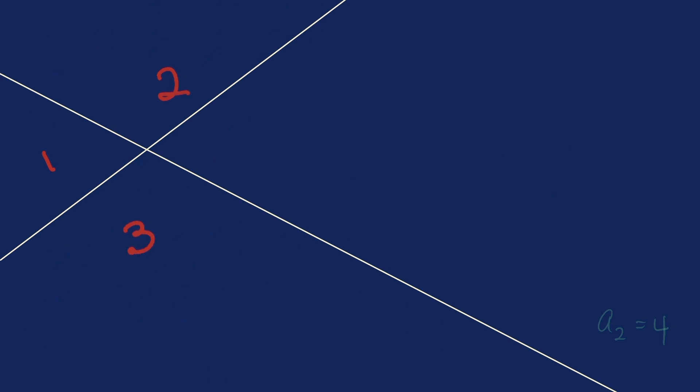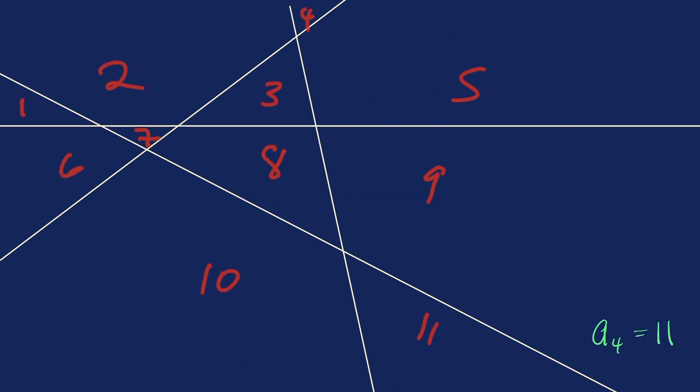When there are two lines in the plane, there are four regions. When there are three lines in the plane, there are seven regions. Do you see a pattern? The third line got split up into three different sections by the two previous lines. So we added three regions. When there are four lines in the plane, there are 11 regions. The pattern goes on like so.